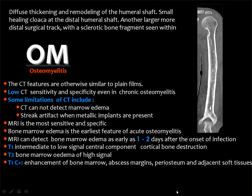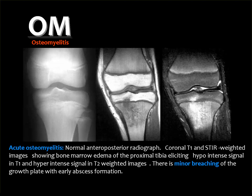Bone marrow edema, the earliest sign of acute osteomyelitis, is seen only by MRI and can be detected as early as one to two days after onset of infection — you do not need to wait seven or fourteen days. Bone marrow edema is of low signal in T1 and high signal in T2. If you inject contrast, the bone marrow edema will enhance — and remember: bone marrow edema of whatever etiology, whether traumatic, inflammatory, degenerative, or neoplastic, will enhance with contrast.